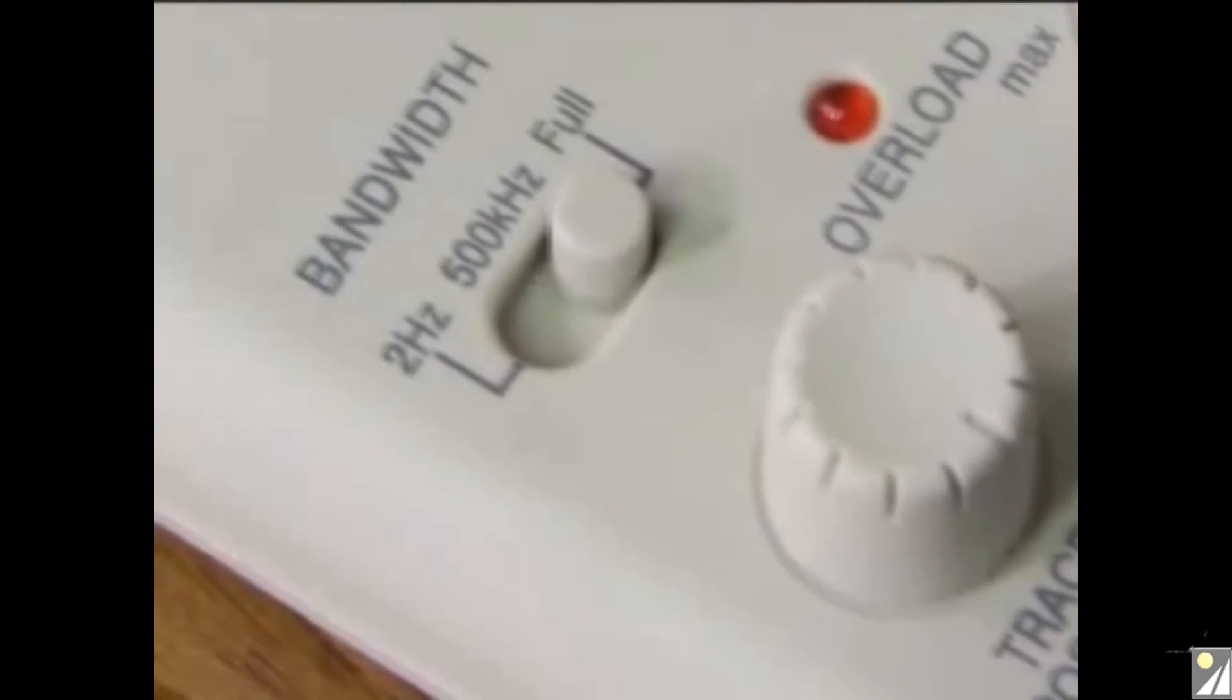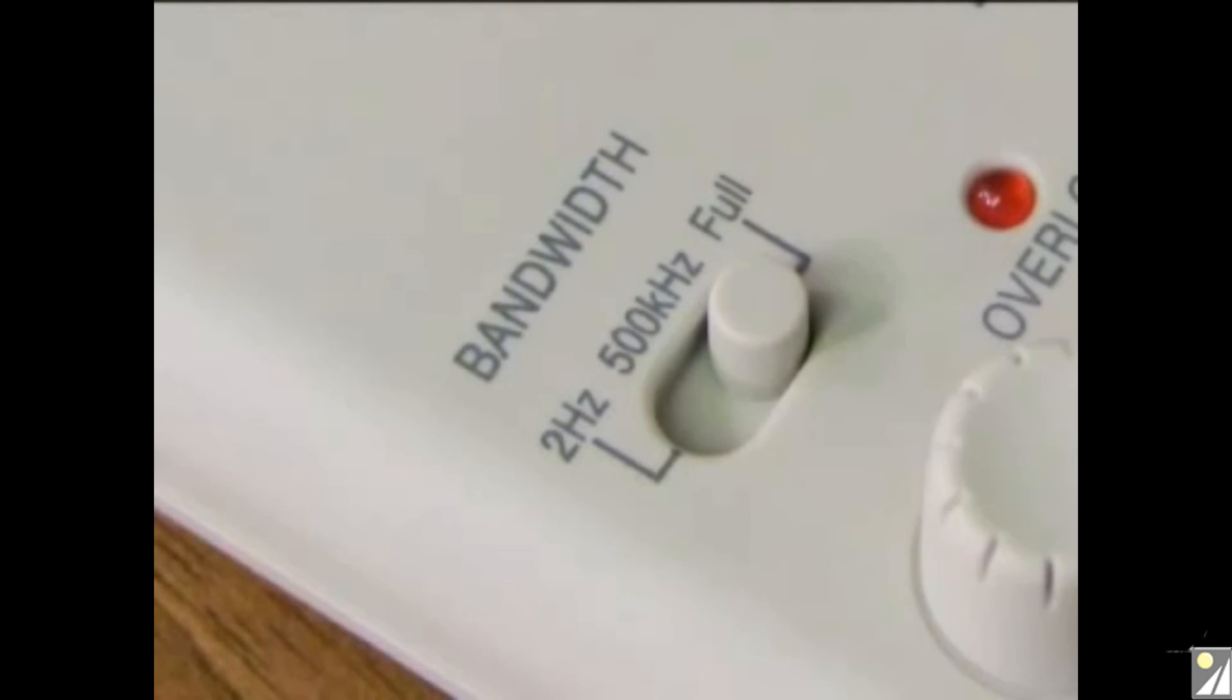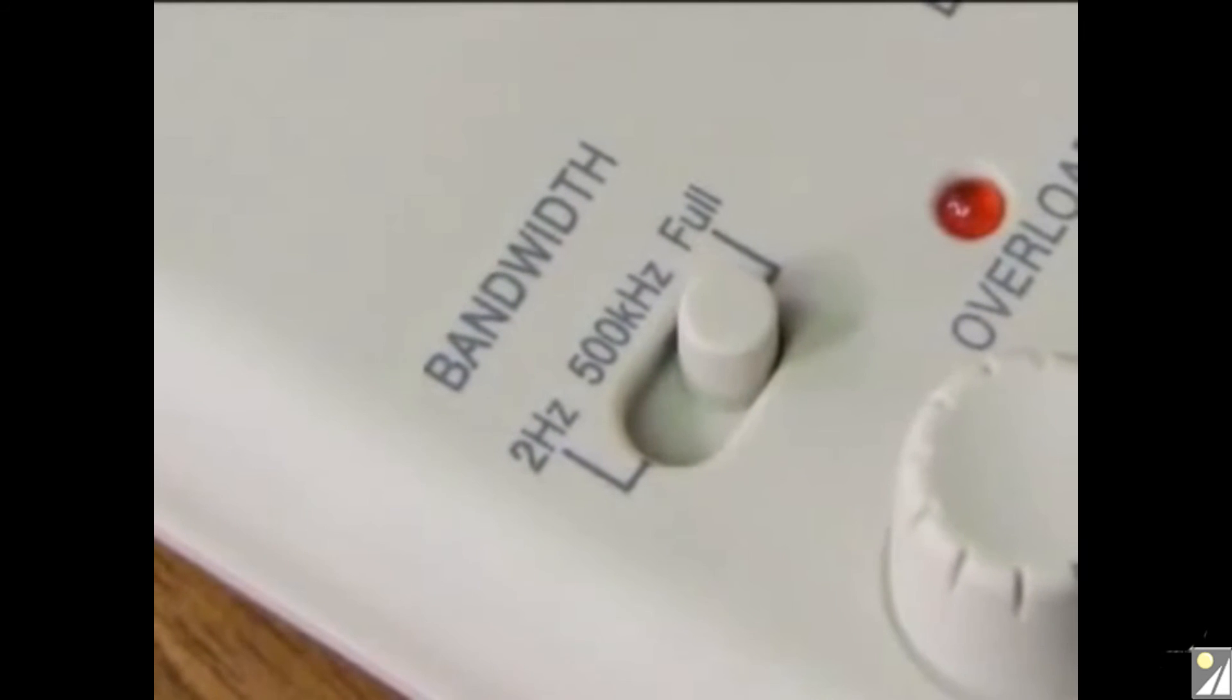Above it is the bandwidth switch. This can be set to full bandwidth 5 megahertz or to 500 kilohertz to reduce the wideband noise and to reject HF interference. The third position, marked 2 hertz, is intended for DC only measurements, where maximum possible AC interference rejection is required.